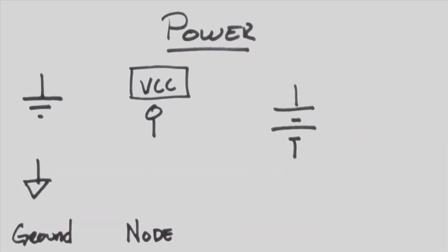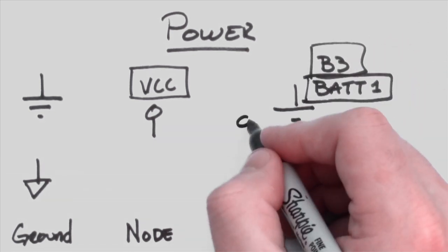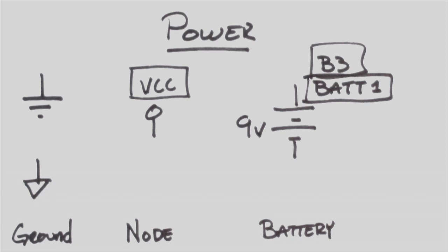Batteries are drawn using alternating long and short lines. The long line on the top indicates the positive side of the battery, while the short line on the bottom indicates the negative side. The designator used is usually the letter B or the letters BATT, followed by whatever number it is in the circuit, as well as the voltage of the battery.